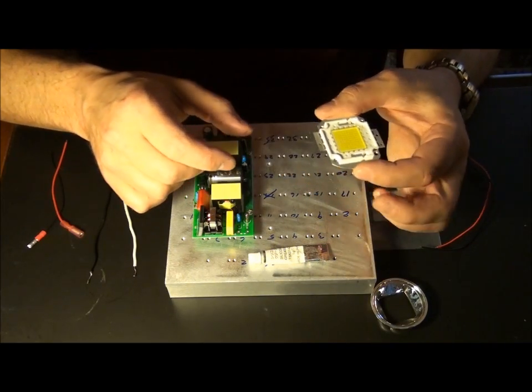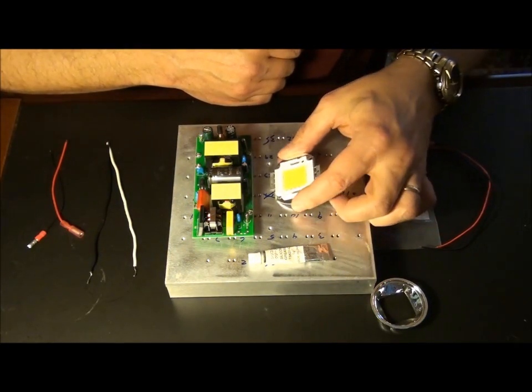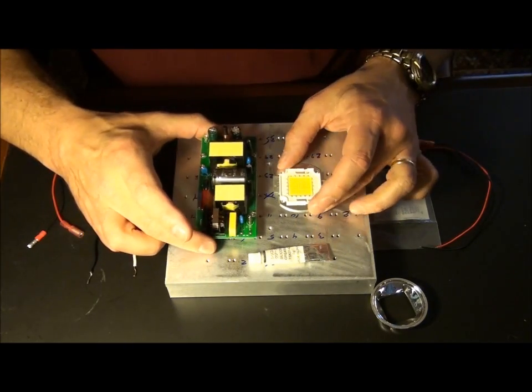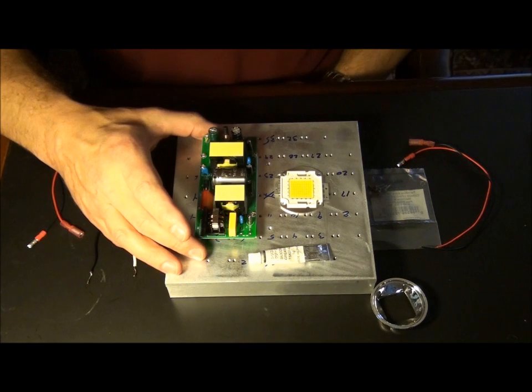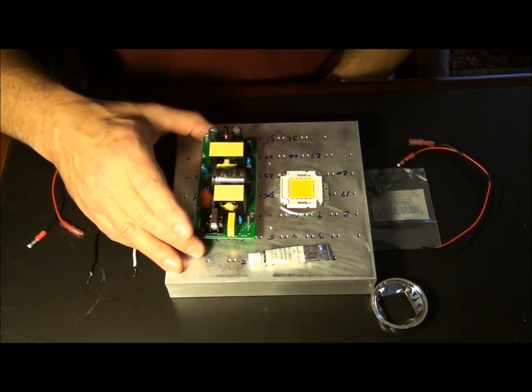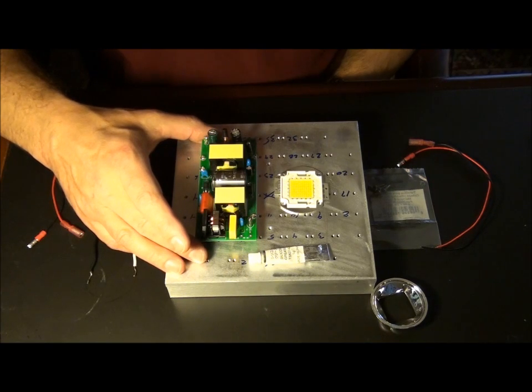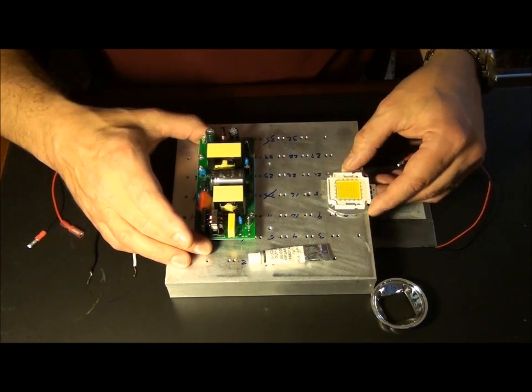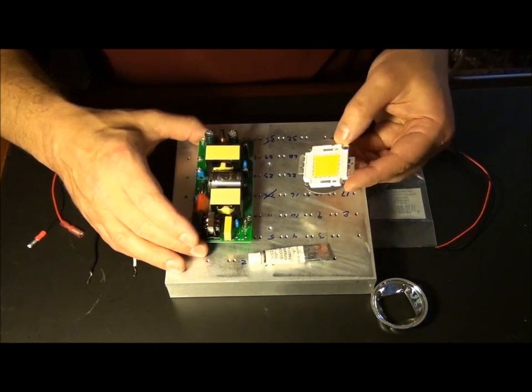I've got my soldering iron ready to roll here. I've got a 100-watt driver, which I bought from the same place. These came from, I think it's called Deals Extreme or Deals Express. I'll see if I can post a link to that. Very inexpensive. You have to watch out when you're buying these things. This set should cost you about 100 bucks for the driver and LED.